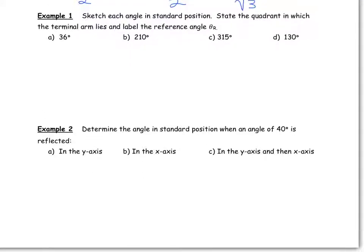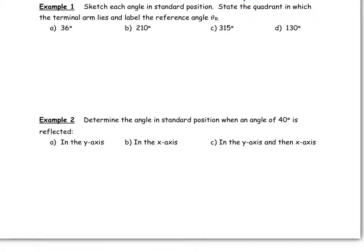We're going to practice sketching some angles in standard position, stating the quadrant in which the terminal arm lies, and labeling the reference angle theta r. The first angle is 36 degrees. Since it's between 0 and 90 degrees, it terminates in quadrant one. The reference angle equals the angle itself, so theta r also equals 36 degrees.